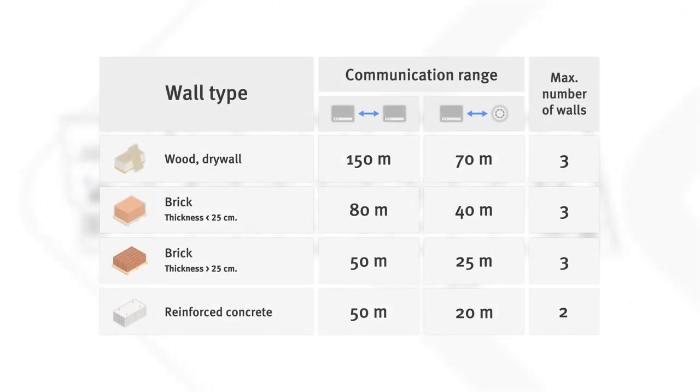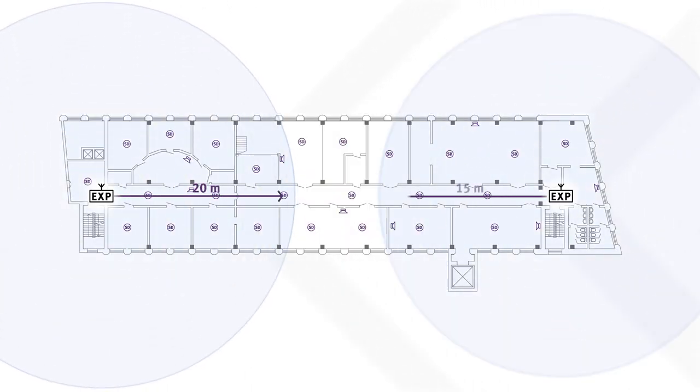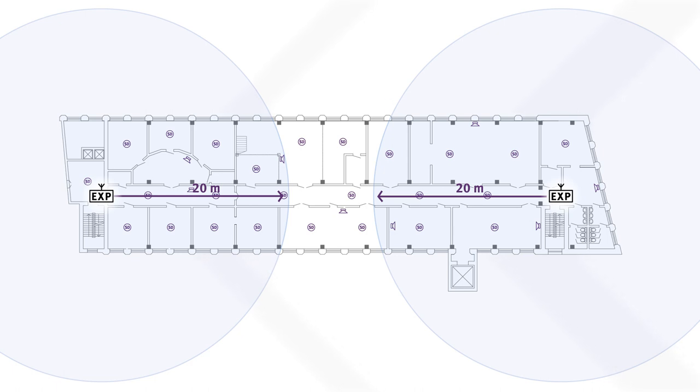Next, check the expected communication range using the table from the manual. In our case, the range is limited to 20 metres and two walls. Create two circles around the expanders with a radius that corresponds to the communication distance. In the centre of the floor, there's a small area left without network coverage. Put another expander there and create a circle to indicate its range.